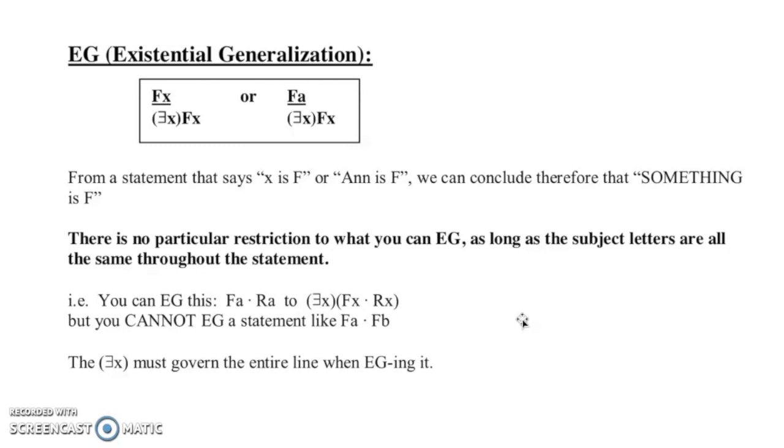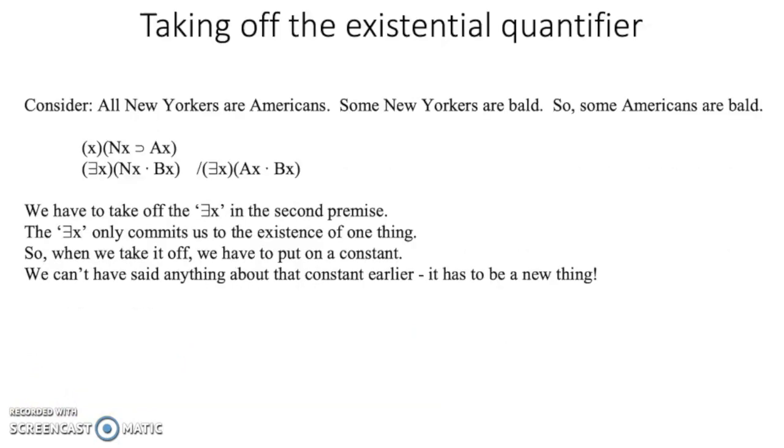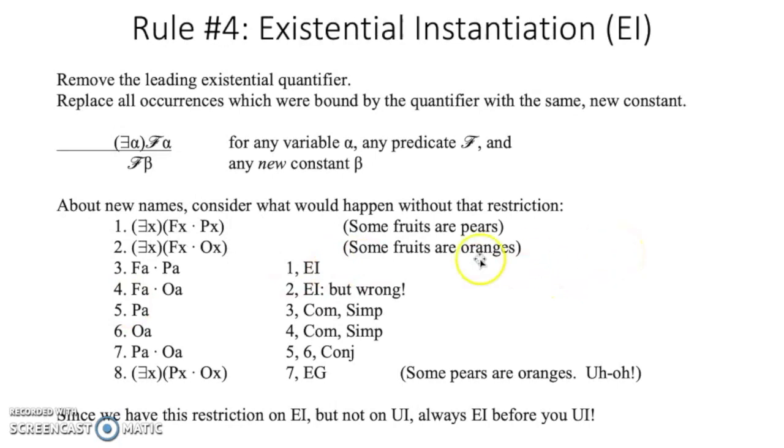Okay, so taking off the existential quantifier is when it gets a little tricky. So let's just look at this argument. All New Yorkers are Americans, so every universal. Some New Yorkers are bald, and we have a particular. So some Americans are bald, another particular or existential. Okay, so the key here is when you take off the existential quantifier, you have to put on a constant because we're only talking about one thing within the larger area. And we can't have said anything about the constant earlier. So when you do the EI, you have to choose a completely new constant.